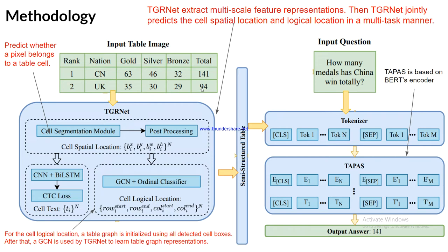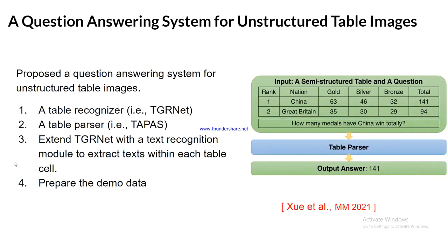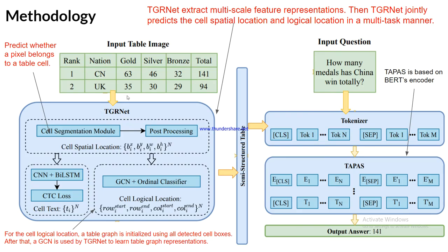First, they have an input table image — called the unstructured table image — which is given as input to TGR-Net. TGR-Net is a table recognizer. TGR-Net will recognize the table and extract multi-scale feature representations.